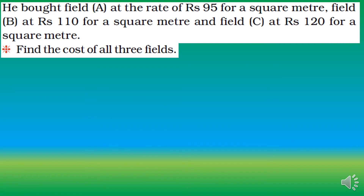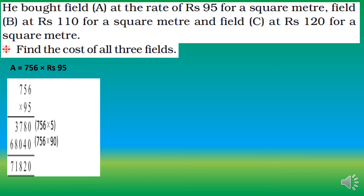He bought Field A at rupees 95 per square metre. Cost of Field A: 756 × 95 = rupees 71,820. Using Bela's method: 756×5 = 3780 and 756×90 = 68,040; adding both gives rupees 71,820.